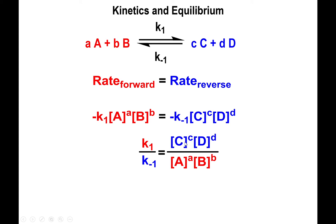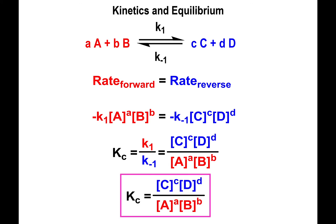The ratio of the rate constants is what we ultimately call the equilibrium constant itself. It is this expression — products over reactants, each raised to their balancing coefficients — that we're going to be looking into in this chapter.